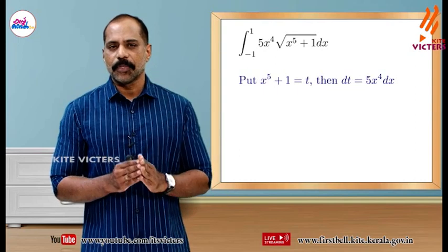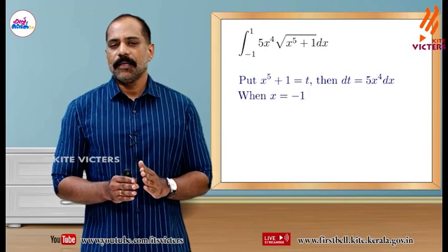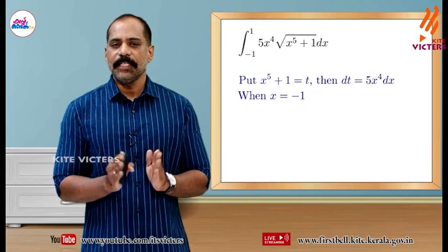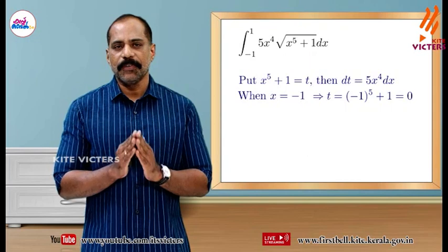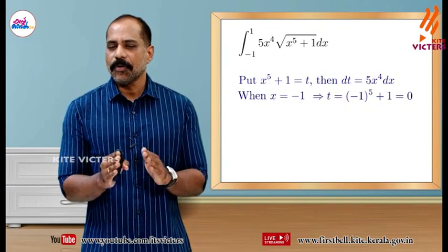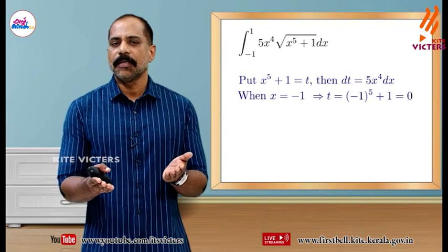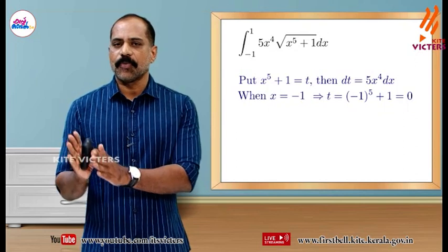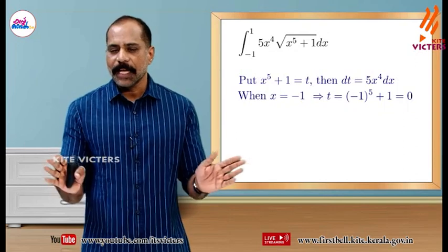When x is equal to minus 1, t is equal to minus 1 raised to 5 plus 1. Minus 1 raised to 5 is minus 1, plus 1 equals 0. So the lower limit is equal to 0.